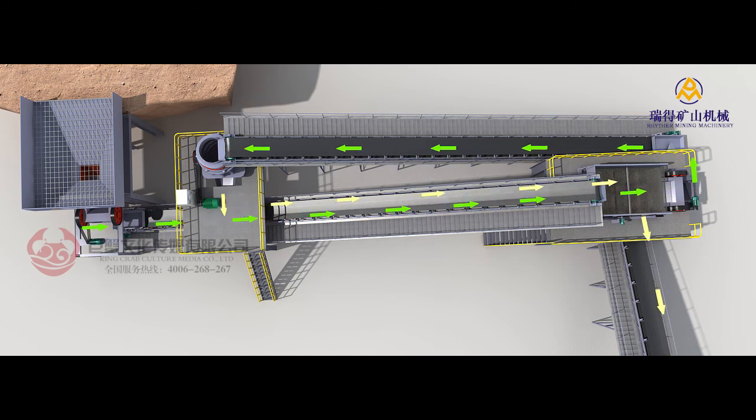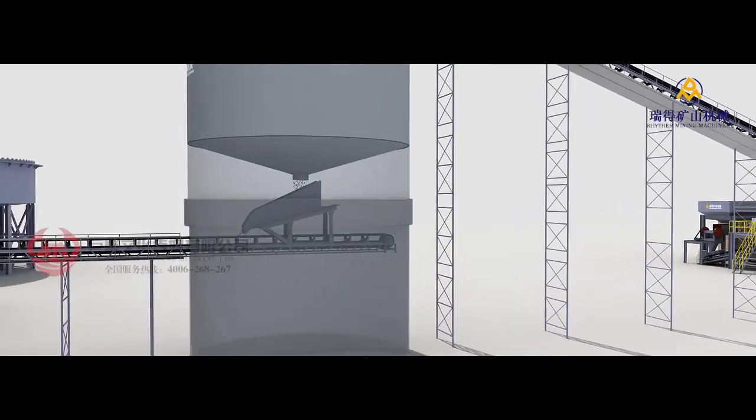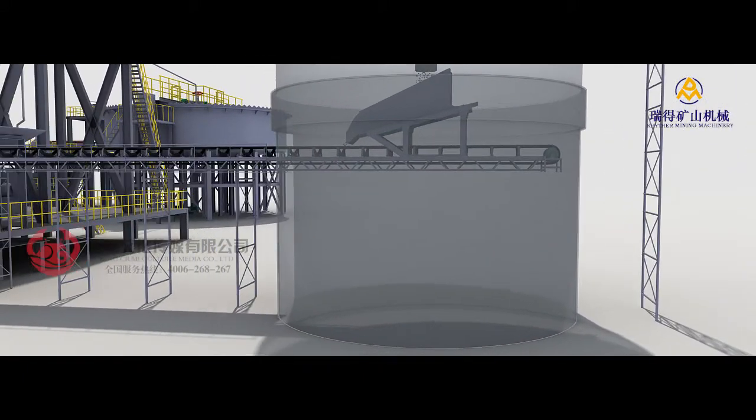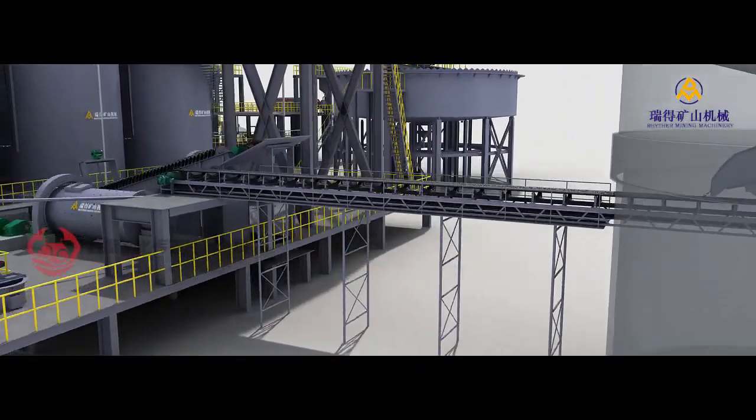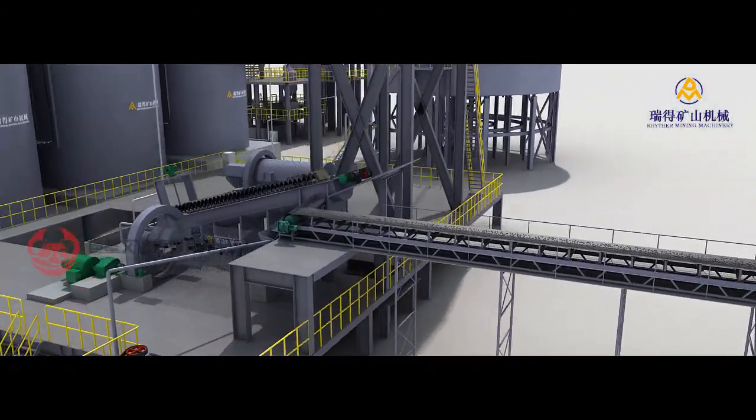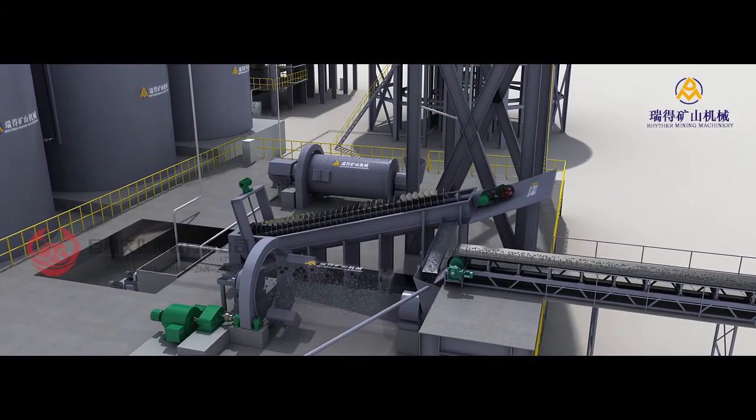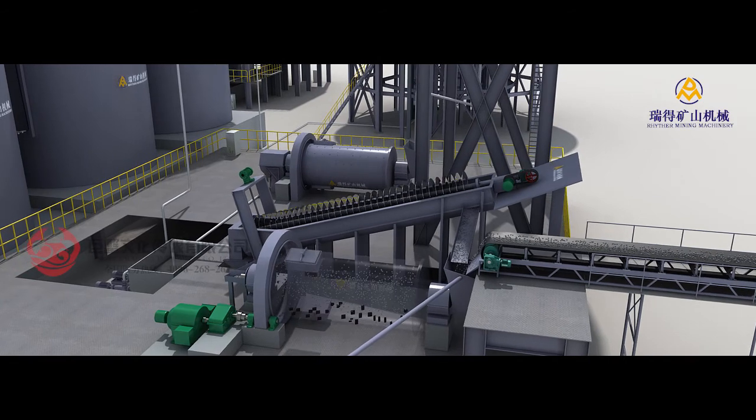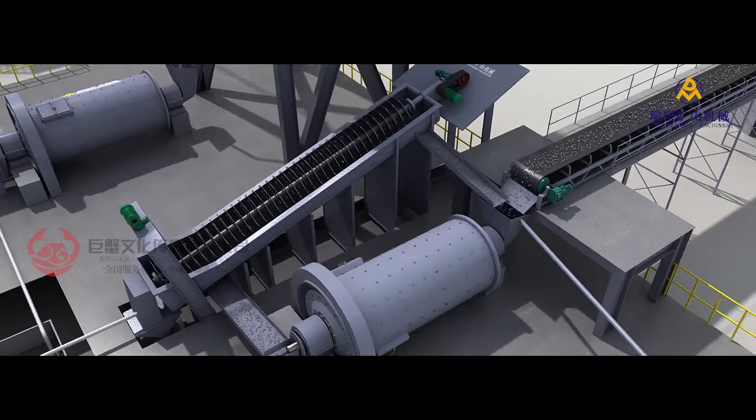Ore in fine ore bin will be fed to belt conveyor by feeder which will transfer ores to single stage ball mill. The ball mill uses rolling bearings which can save 30% of energy compared with sliding bearings. Motor and reducer are well-known brands while electrical components are manufactured by Schneider.